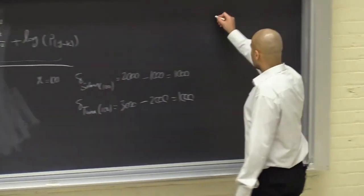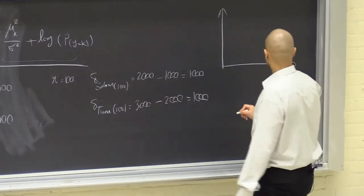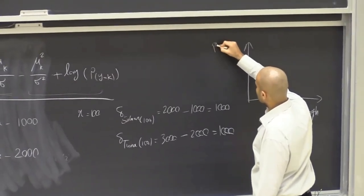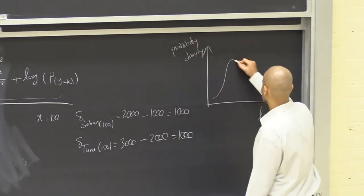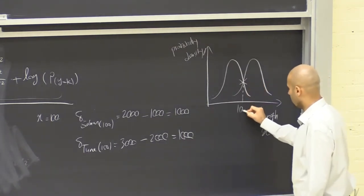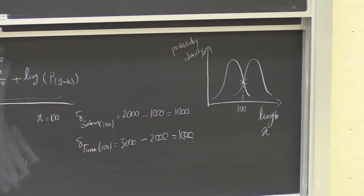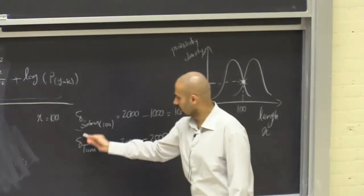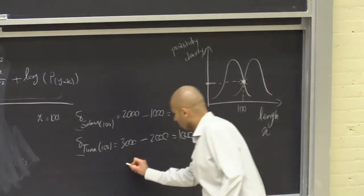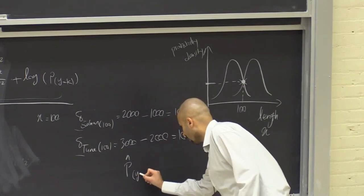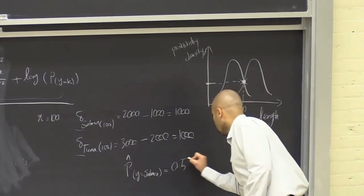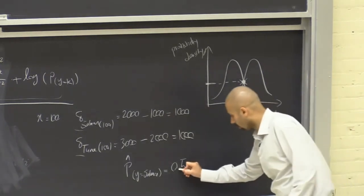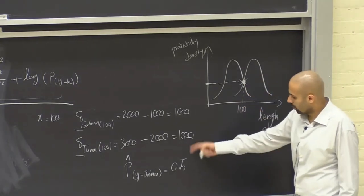The scores are equal. When scores are equal, we are right at the decision boundary. On a plot of length vs. probability density, a length of 100 is equally likely to be salmon or tuna, because the probability density functions give the same value. These density values are proportional to the δ values we calculated. Therefore, the estimated probability p̂(Y = salmon) is 0.5 — no preference for either class.